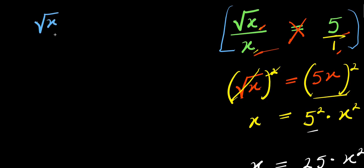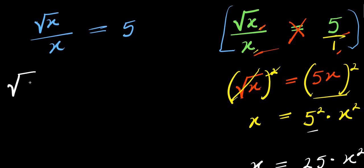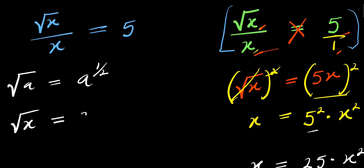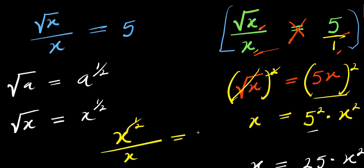Now let's solve this same equation again — root x divided by x equals 5 — using a second method. We start by using the identity that the square root of a equals a to the power of 1/2. So square root of x equals x to the power of 1/2, giving us x^(1/2) divided by x equals 5.